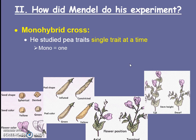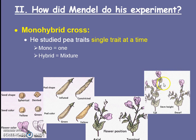So if he was looking at the height of a plant, he would only look at height during that experiment. If he was looking at the shape of the seed, he'd only look at the shape of the seed for an experiment. He did tons of experiments, but only one trait at a time for each experiment, and that part's really important. The word hybrid means mixture, because he was really interested in how the different trait versions — alleles — tall versus short, when we look at height, how did they mix between different generations for a single trait.